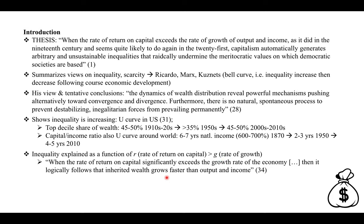When the rate of return on capital significantly exceeds the growth rate of the economy, it logically follows that inherited wealth grows faster than output and income. Assets, inherited wealth — if you start off rich, you're just getting richer. And poor and average working people command less and less of a portion of national income.